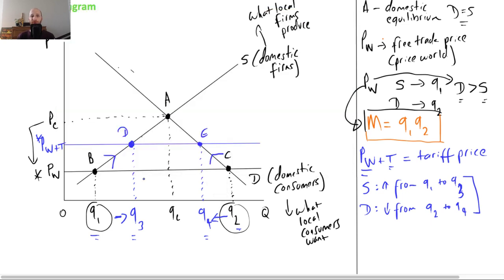So if domestic producers are producing more, we're going to see imports now are not as big as they were before. They're not Q1 to Q2. They're only the difference between demand and supply here. So imports now are Q3 to Q4. They are the difference where demand exceeds supply.